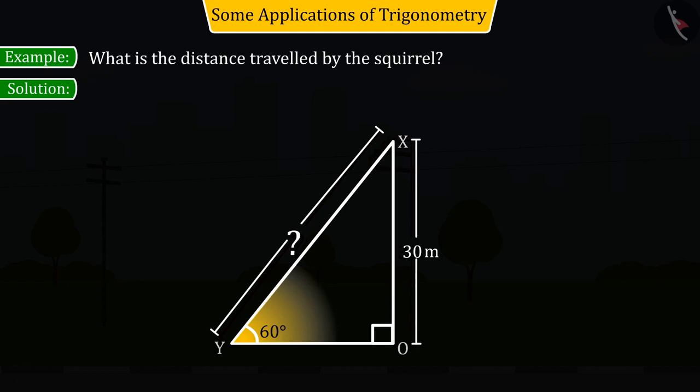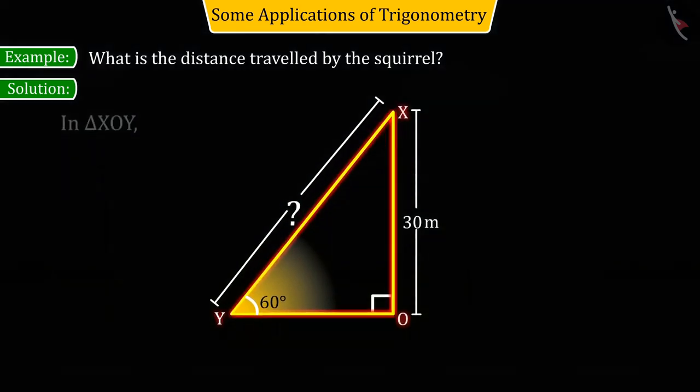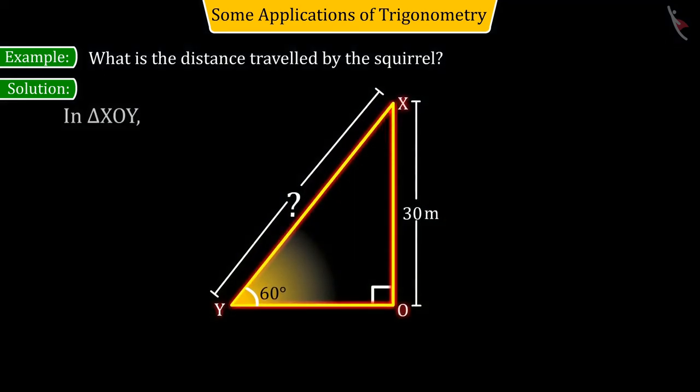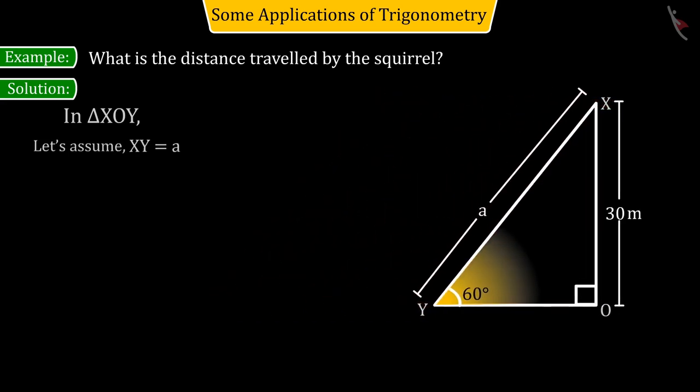Let us first assume that in the right-angled triangle XOY, the length of the string XY is A. And XO equals 30 meters and the value of theta is given as 60 degrees, while OY is unknown.